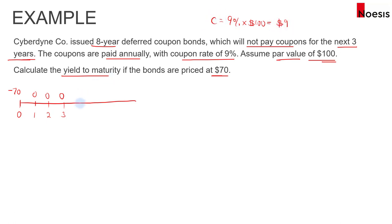From year 4, 5, 6, 7, and the final year 8, there will be a coupon of $9 every year from year 4 up to year 8. And at year 8,